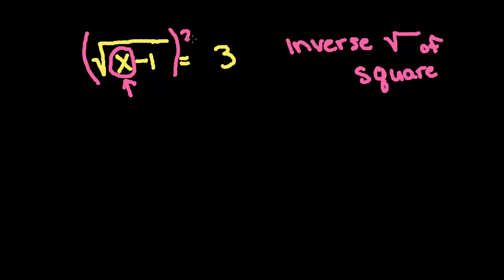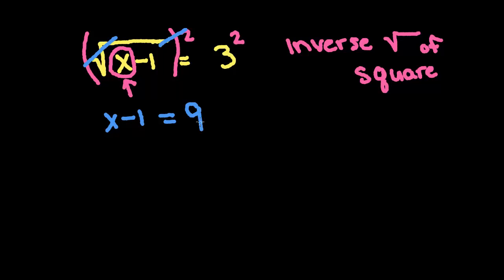We're going to square this side so that we can get x out from underneath that square root. And whatever we do to one side of an equation, in order to keep it equal, we have to do it to the other side. When you square a square root, because they're inverse operations, they undo each other — which means I can just take out what is underneath here, x minus 1. Now I have x minus 1 equals 9, and solving gives me x equals 10.